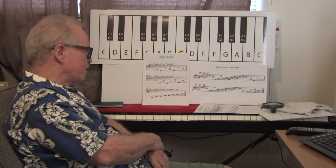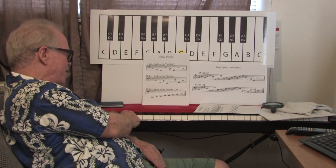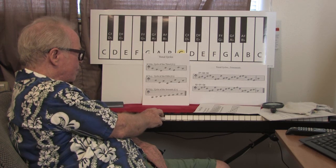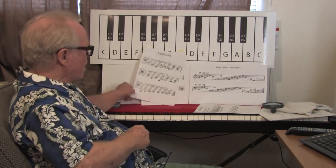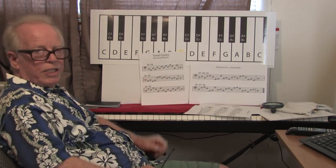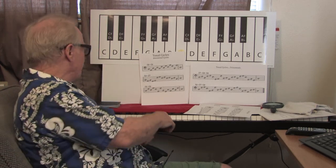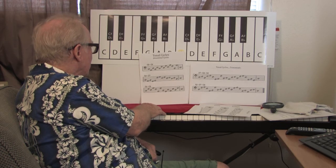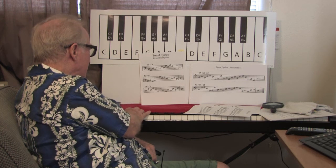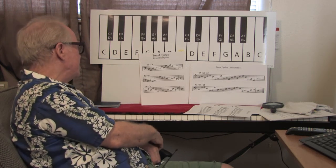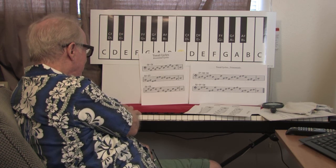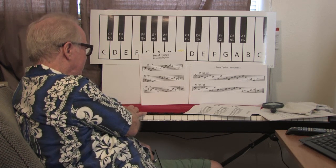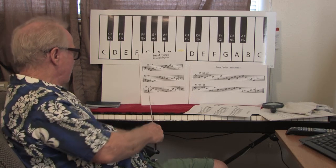After that is the cycle of the seventh. You start on C — instead of going all the way down to D, you can just go right on up. Now if we combine those: a C3 plus a C5, this is what you end up with. And here's a C3 plus a C7.